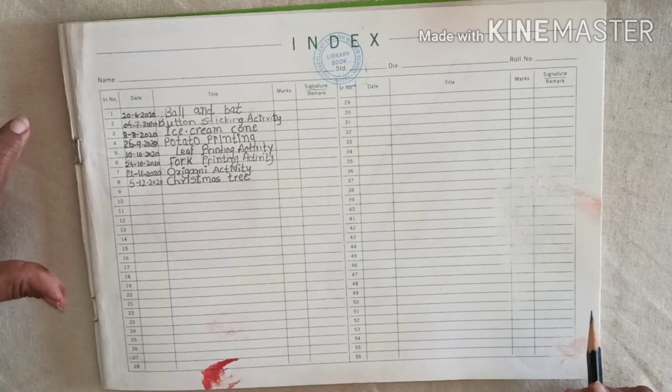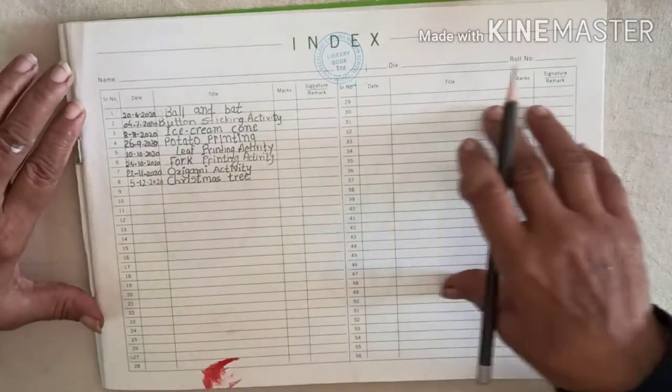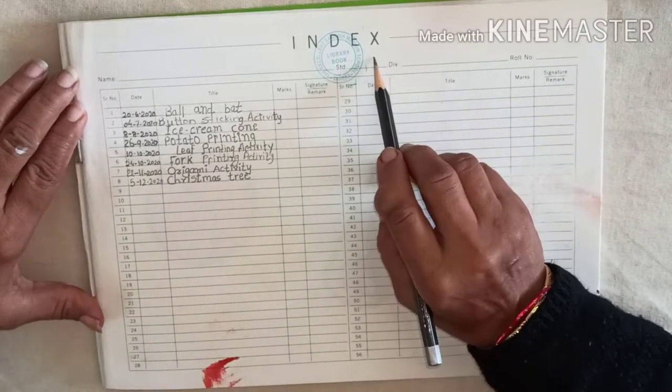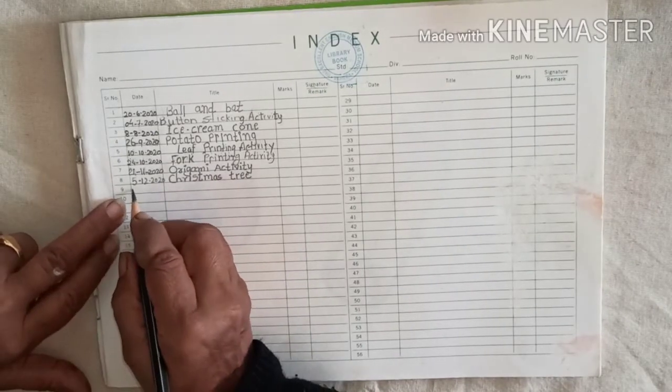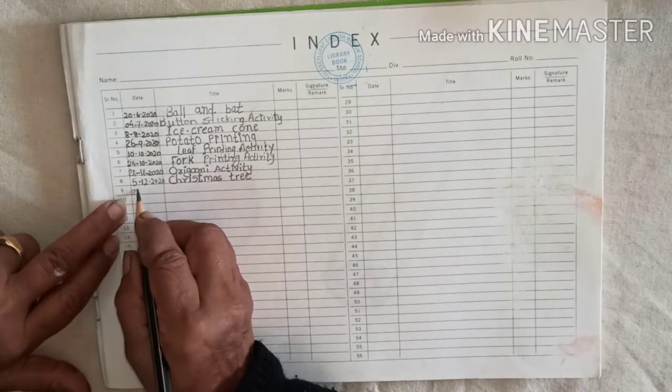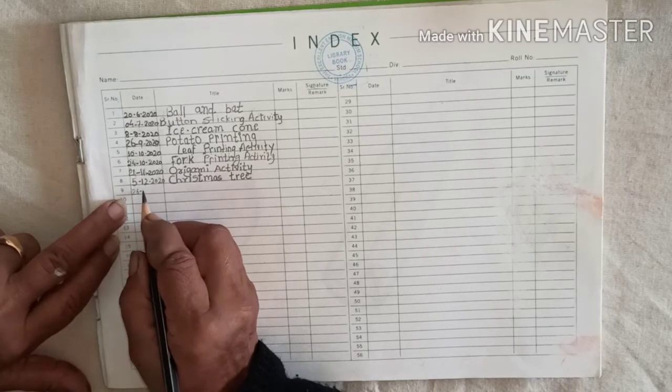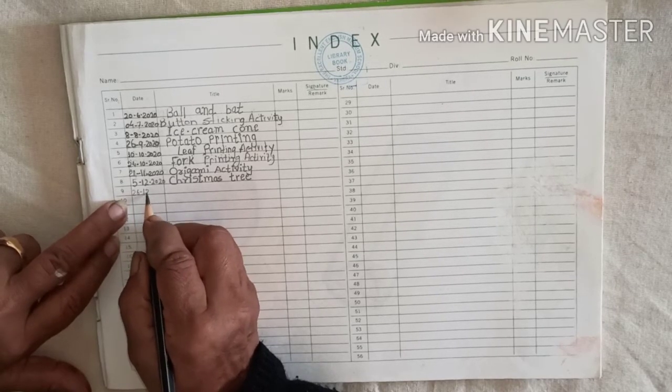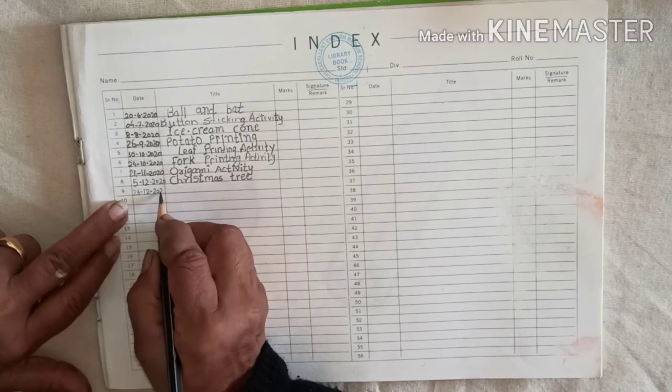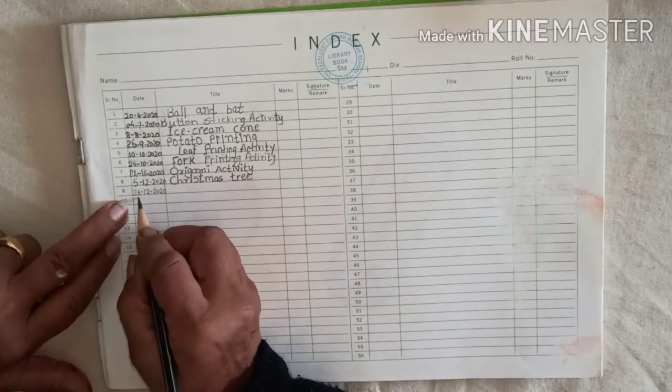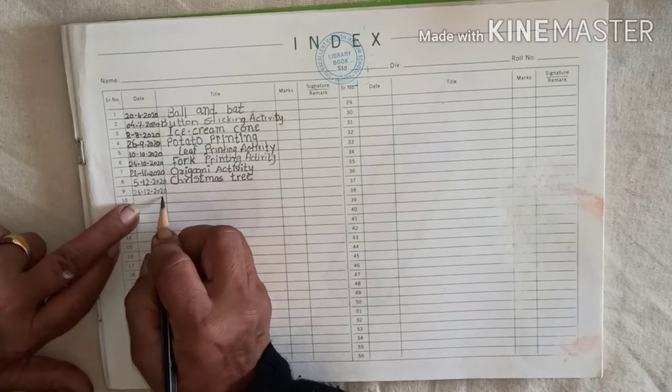So for that open your sketchbook and page index. In that you have to write the date first. Okay? Write the date 2, 6, dash, 1, 2, 12, 2, 0, 2, 0. Okay? 26, 12, 20, 20.